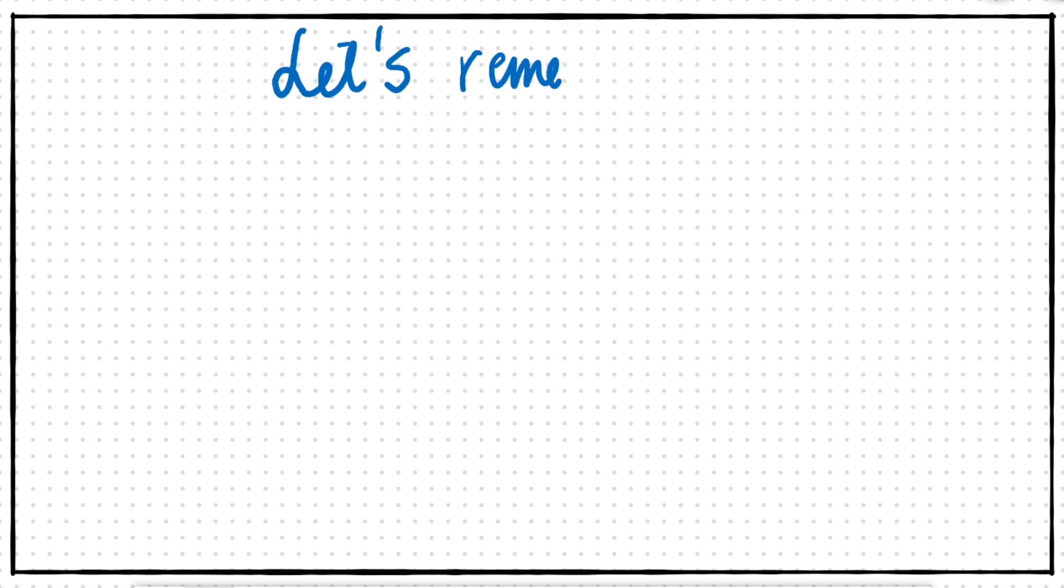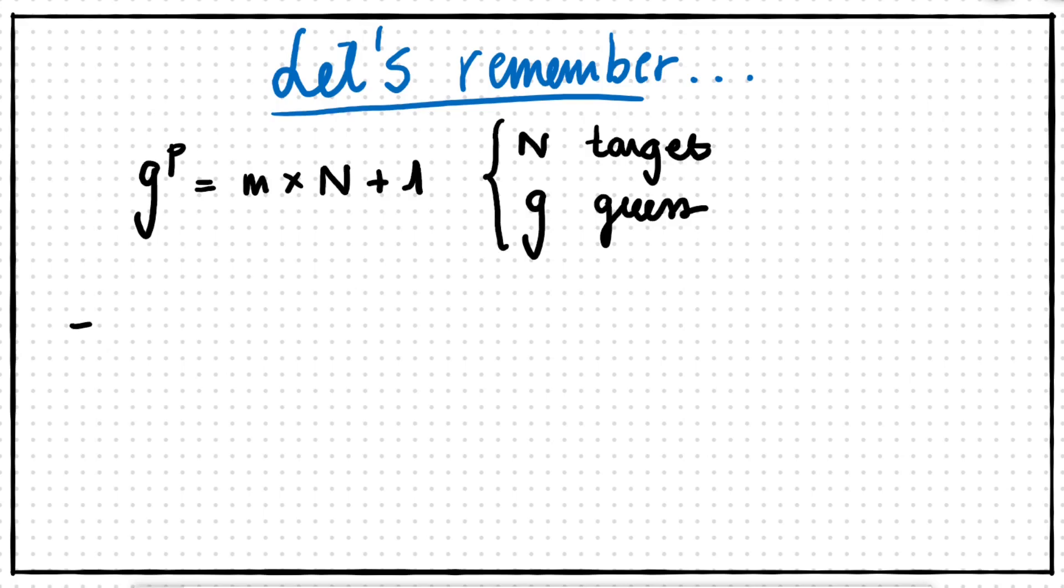From the last video, we remember we came to this formula: g to the p equals m times n plus 1, where g is our initial guess and n is the number we want to factor. We rewrote the equation and we ended up on the following: g to the p over 2 plus 1 times g to the p over 2 minus 1 equals m times n.